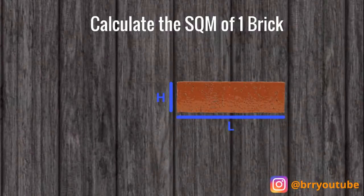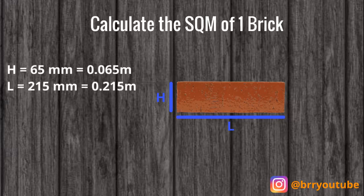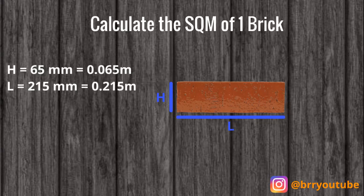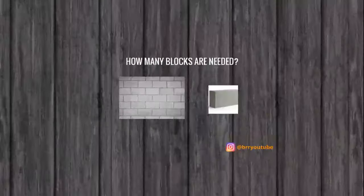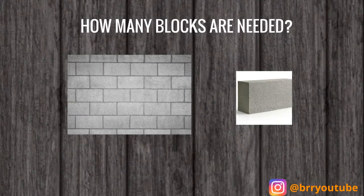We're going to do the same for a brick — this is again a typical British standard size brick. The height is 65 millimeters, which converts to 0.065 meters, and the length is 215 millimeters, which converts to 0.215 meters. So the square meterage for one standard brick is 0.0139 square meters.